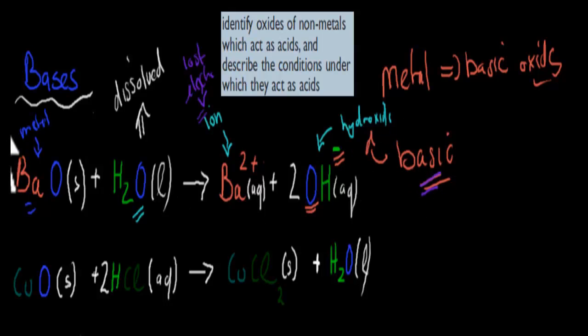But what happens if we can't put it into water? How can we figure out if it's basic or not? What we can actually do is, this here is our metal again, our non-soluble metal that won't dissolve in water. We can put it into hydrochloric acid instead.